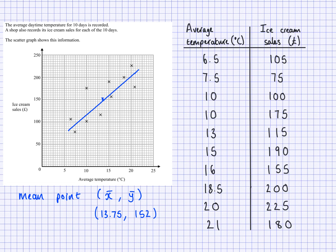What I want you to do for your homework is, for those scatter graphs that you've drawn on your graph paper, find the mean point for those values on your scatter graph. Plot the mean point and use it to draw a line of best fit. Do that for every scatter graph that you have in your homework.